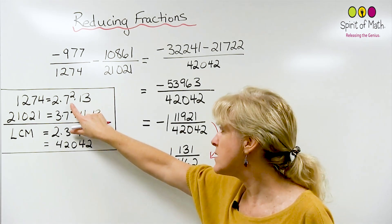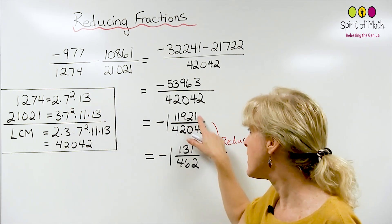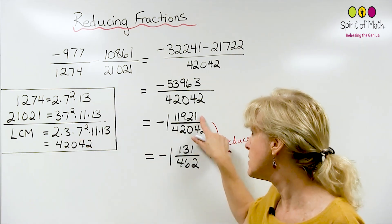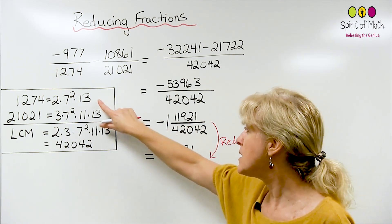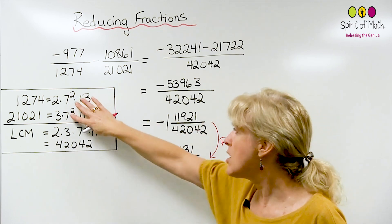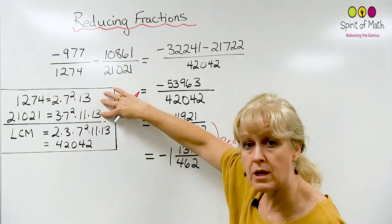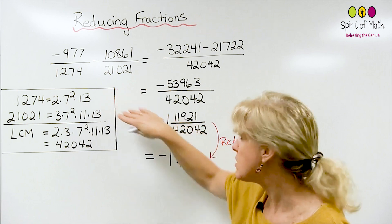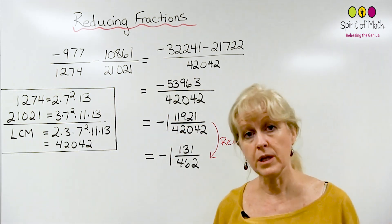And in fact, the 7 squared might even divide into both of these. You know it will divide into this. It might divide into that. And the 13 might. It's not that these will for sure be the numbers that you can divide into the numerator, but they're the only ones that have the possibility.